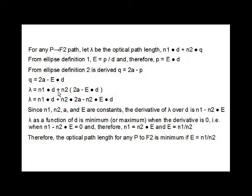Substituting this for one of the instances of D in the optical path length, we get lambda equals N1 times D plus N2 times 2A minus ED, or N1 times D plus N2 times 2A minus N2 times ED. Since N1, N2, A, and E are all constants, the derivative of lambda over D is N1 minus N2 times E.